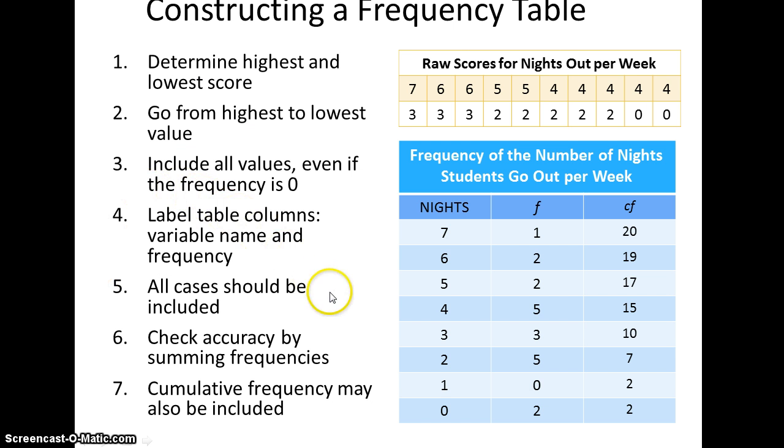Just to review, when we're constructing a frequency table, we determine the highest and the lowest scores, we start with the highest value and go down to the lowest value, we include all values even if the frequency of that value is zero, we label all of our columns, we include all of the cases. Here we have 20 different scores, so this adds up to 20, and we check our accuracy by summing our frequencies. We might also have this cumulative frequency as well.